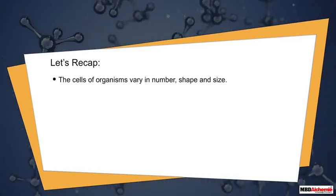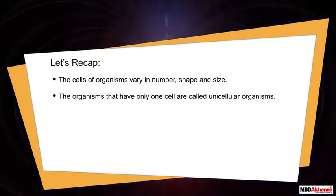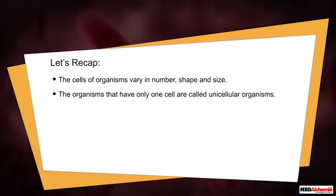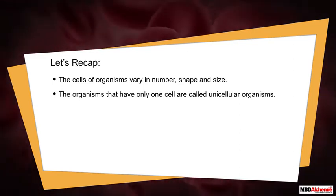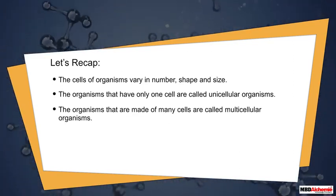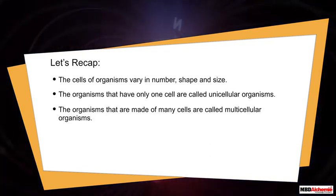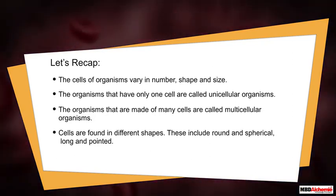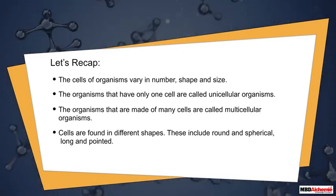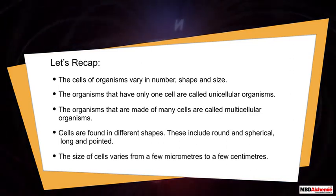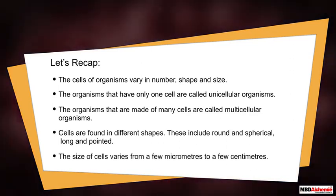Let's recap: the cells of organisms vary in number, shape, and size. Organisms that have only one cell are called unicellular organisms, and organisms made of many cells are called multicellular organisms. Cells are found in different shapes, including round, spherical, long, and pointed. The size of cells varies from a few micrometers to a few centimeters.